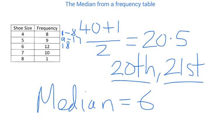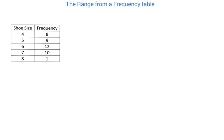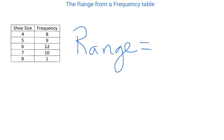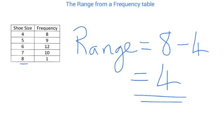Finally, the range — which isn't an average. For the range we only use the left column, the shoe size values. The biggest shoe size was 8 and the smallest was 4, so range = 8 − 4 = 4. Remember: mean, median and mode should be values like the data collected; the range often is not, though in this case it happens to be.